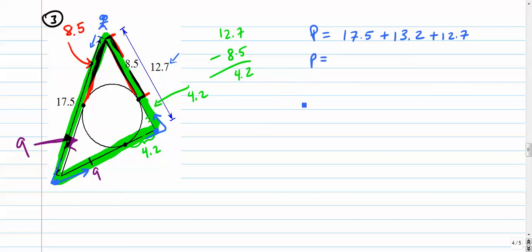So the entire perimeter, let's see if I can do this in my head. These two added together is 30.7, so 30.7 and 12.7, that's 43.4.